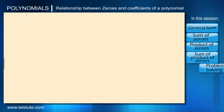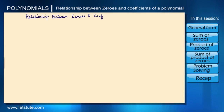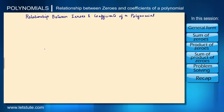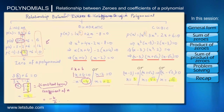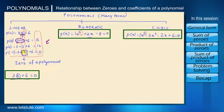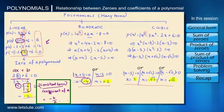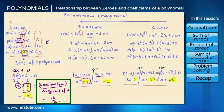Hello everyone. In this session we will be seeing the relationship between zeros of a polynomial and coefficients of a polynomial. Let's quickly recap what we learnt in the previous session. We know what a zero of a polynomial is, how to find the zero of a polynomial by equating it with zero and then factorizing it. We also saw the relation between zeros and coefficients of a linear polynomial, which is minus b upon a.